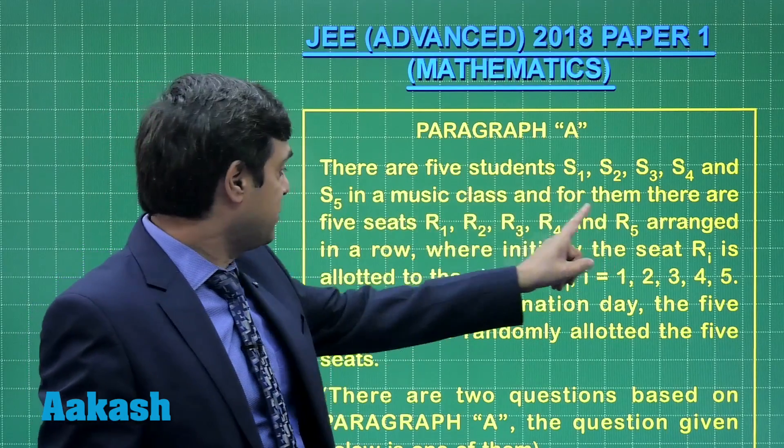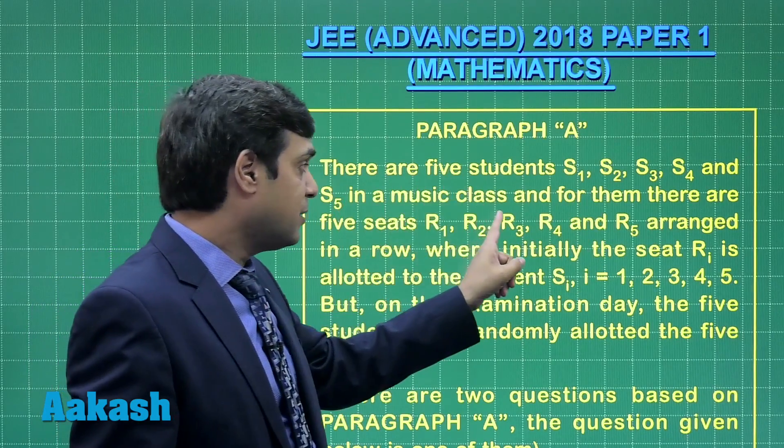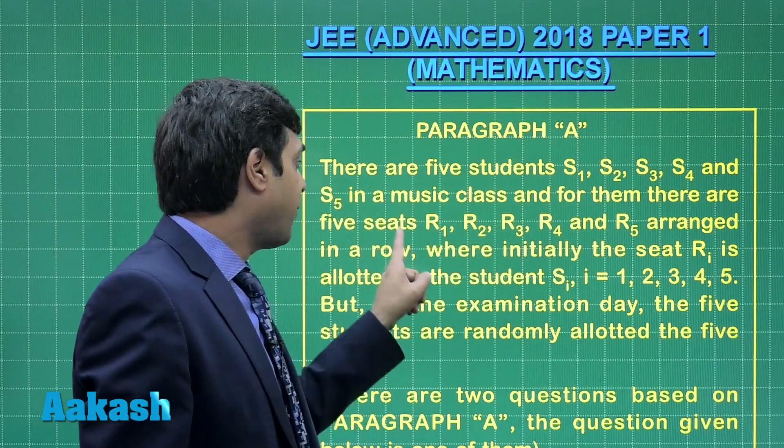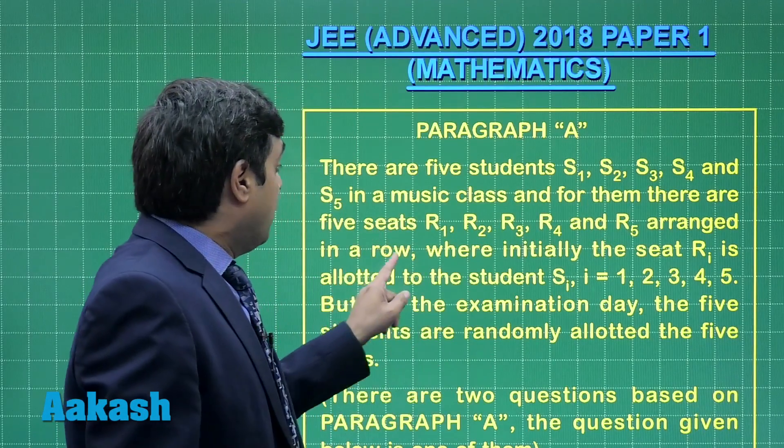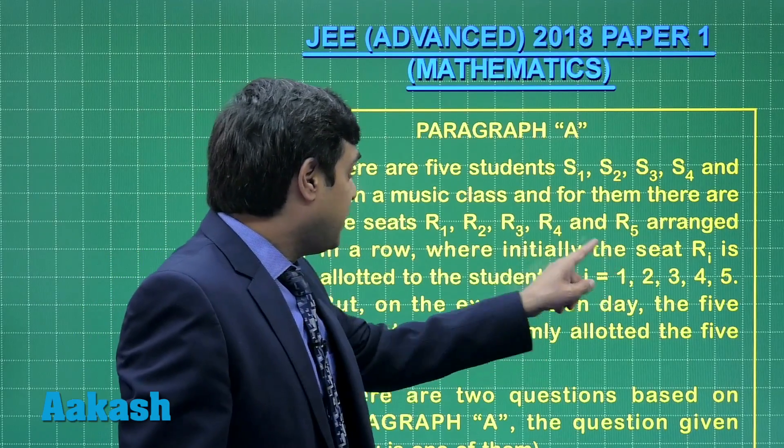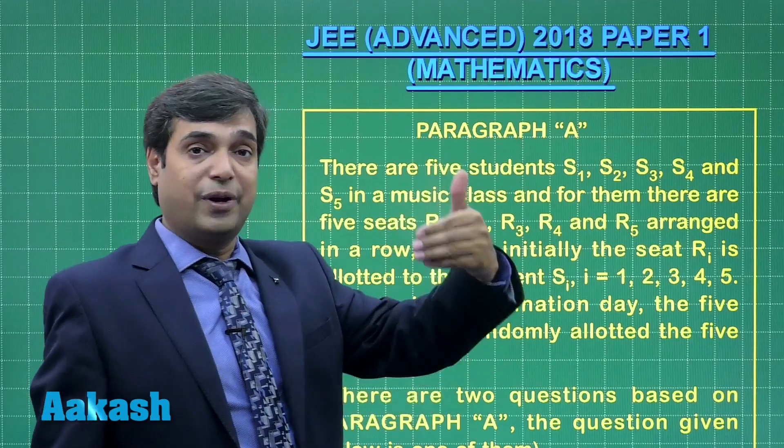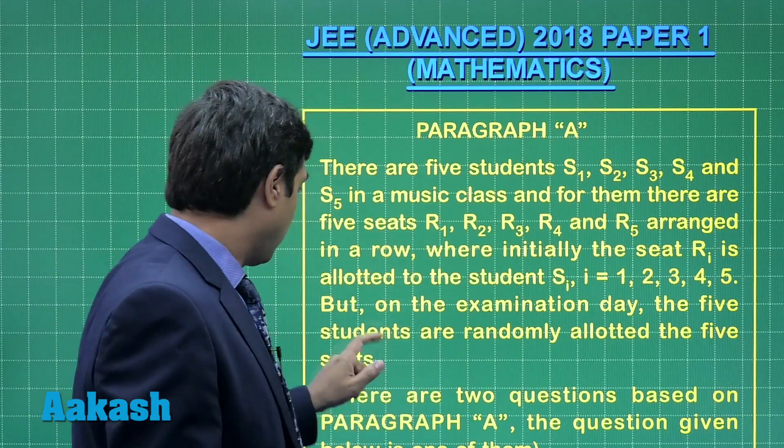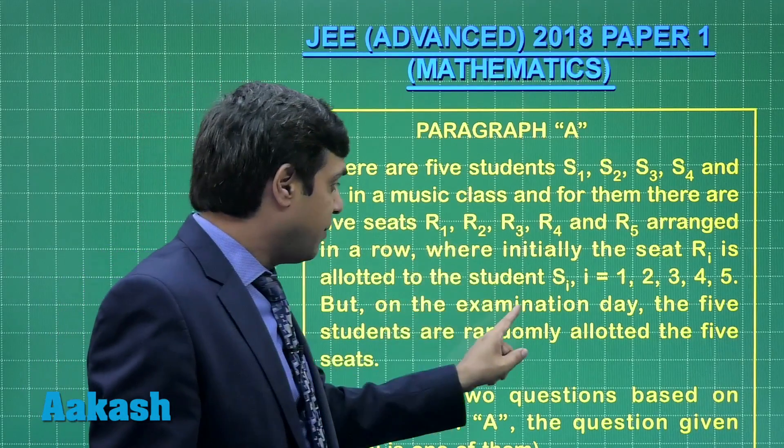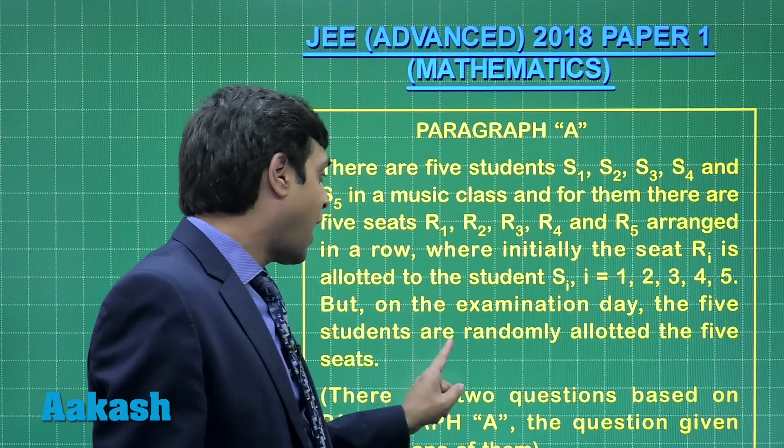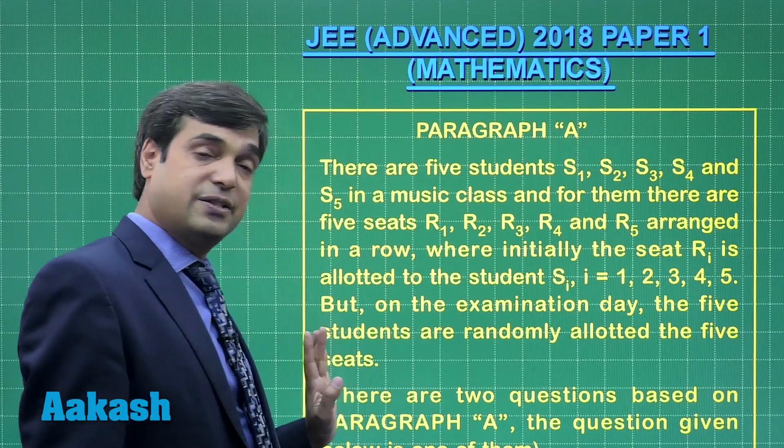There are 5 students in a music class and for them there are 5 seats reserved where initially the seat Ri is allotted to the student Si, meaning R1 for S1, R2 for S2 and so on. But on the examination day the 5 students are randomly allotted the 5 seats.